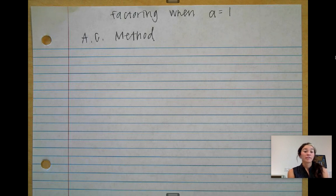In this lesson, we'll be factoring using the AC method. Previously, we factored when A was greater than 1. I'm going to do an example when A equals 1 now.